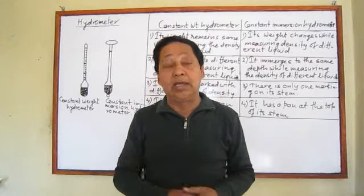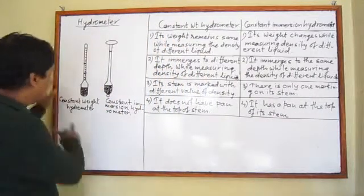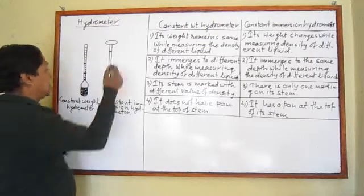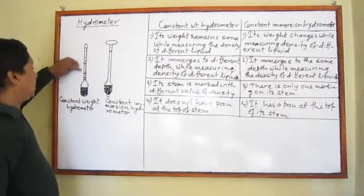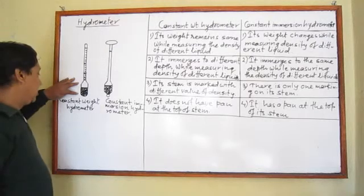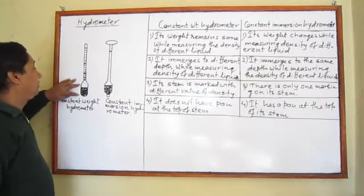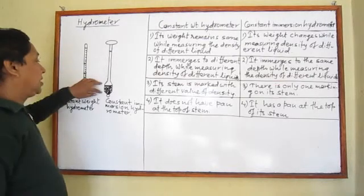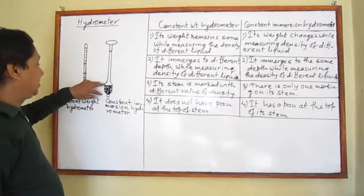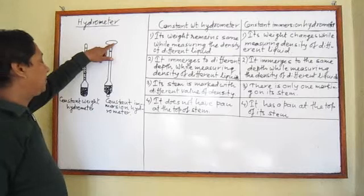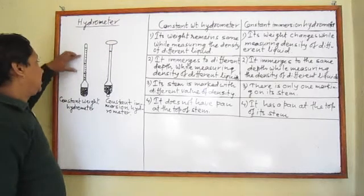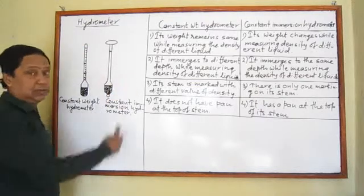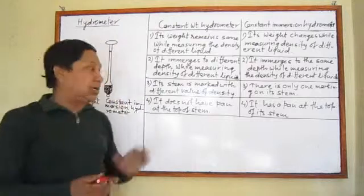Let's take a closer look at these two types of hydrometer. One is called the constant weight hydrometer and the other is the constant immersion hydrometer. In the constant weight hydrometer, there is a stem which opens into a glass ball. The glass ball contains lead salts. The stem is calibrated with values of density, and there is no pan. In the constant immersion hydrometer, the glass ball also contains lead salts, but there is only one marking and there is a pan at the top.